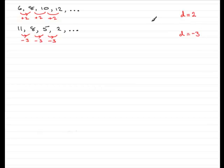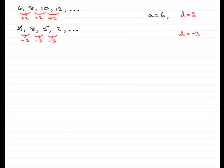We also have other notation for arithmetic progressions. We always call the first term of the sequence the a term. So in the first sequence a is going to be 6, and in this particular sequence a would be 11.